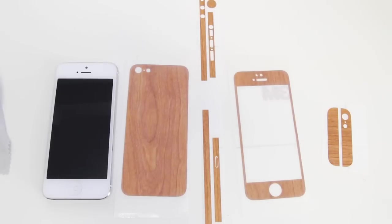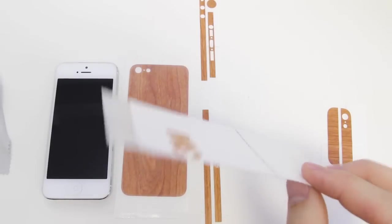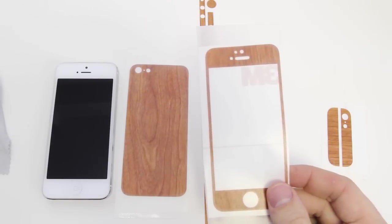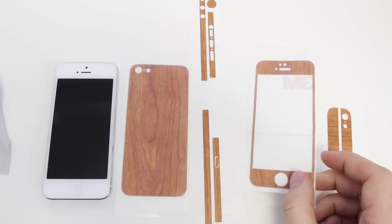Alright guys, the first thing we're going to do is put on the front piece of our full body wrap. What's cool is that we include a transfer film in the front, so it makes it really easy for you to put this on and get it perfectly on your iPhone 5.